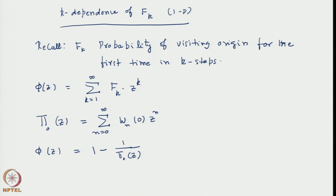We specifically focus on the 1D case. The logic we follow is: if we have results of occupancy probabilities for 1D, the w_n(0) values are known. So we can construct π₀(z), from that we can construct φ(z), and once we construct φ(z) and expand it in powers of z, we have the f_k as coefficients. This is the logic we will follow.